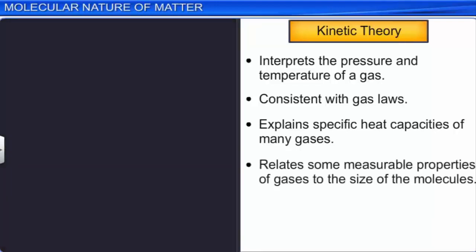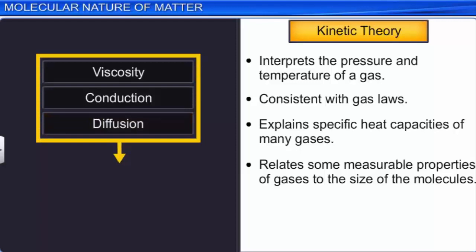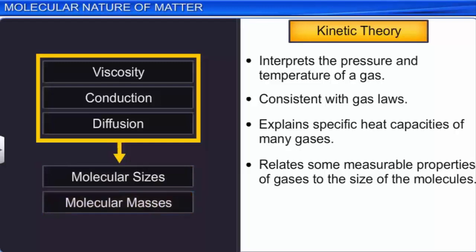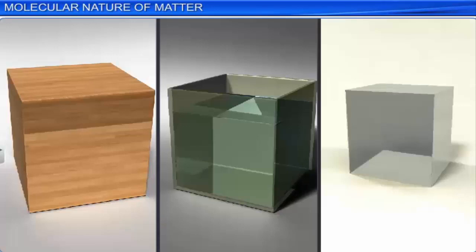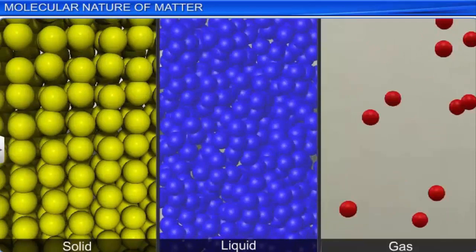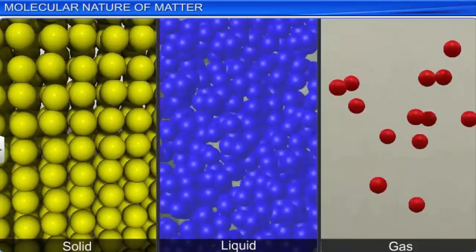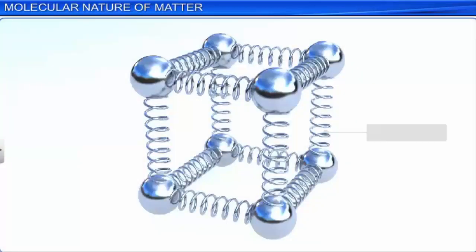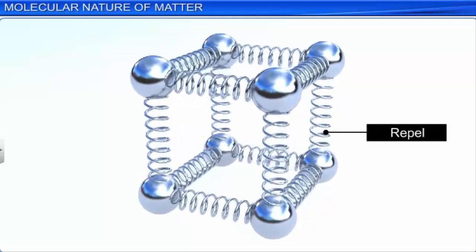It relates the measurable properties of gases like viscosity, conduction, and diffusion to the size of molecules. In fact, these relationships help in the estimation of molecular sizes and masses. The atomic hypothesis is one of the most important theories ever proposed. According to the atomic hypothesis, all things are made up of tiny particles called atoms. These tiny particles move around in continuous or constant motion. Atoms attract each other when they are separated by small distances and repel each other when compressed into one another.